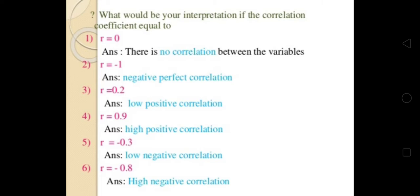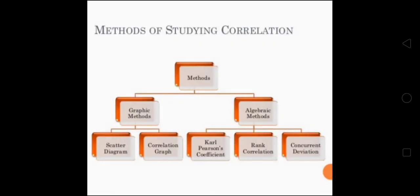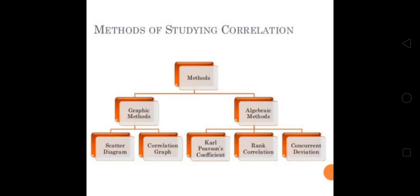The values of correlation will be of five types, mentioned here: no relation, negative perfect, low positive, high positive, low negative, and high negative. These are the five types of correlations which we will get.